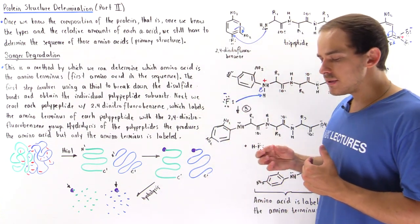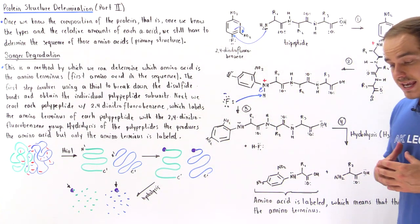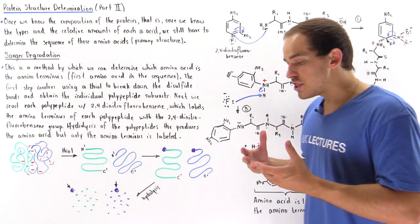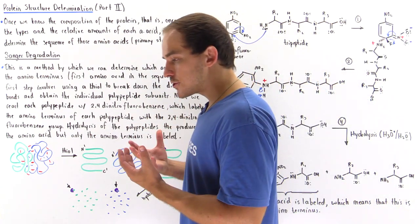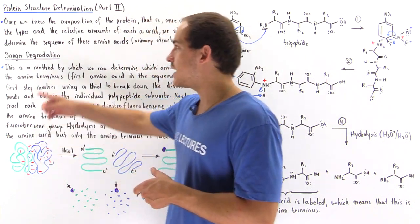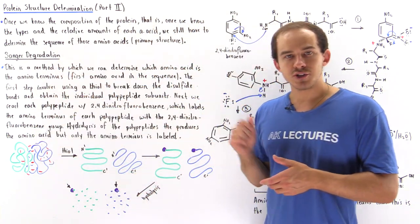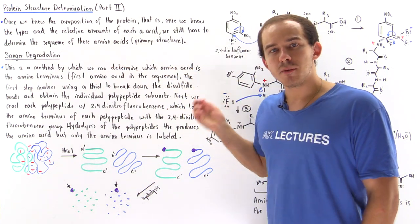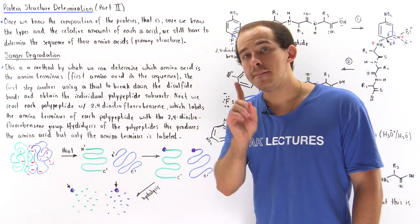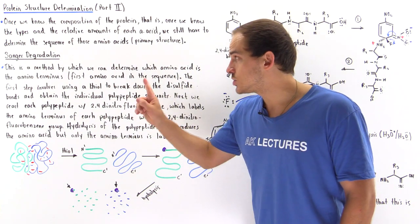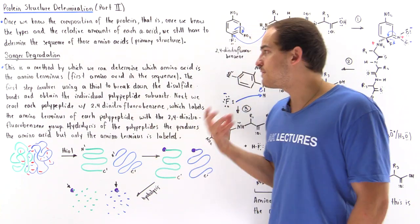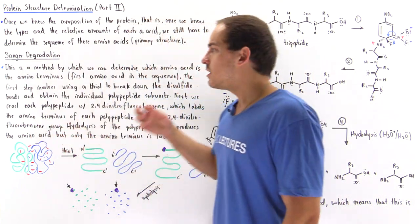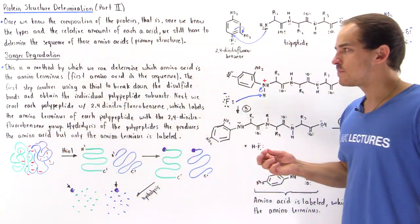The first step in determining the sequence is to determine what the first amino acid is. The method we can use to determine the first amino acid is known as the Sanger degradation. This is the method by which we can determine which amino acid is our amino terminus — the first amino acid in our sequence, which contains the free amino group.